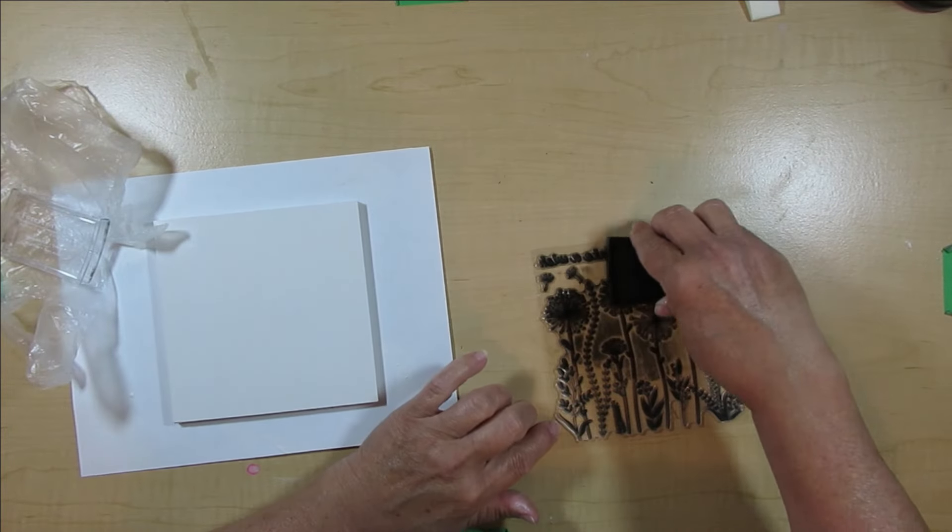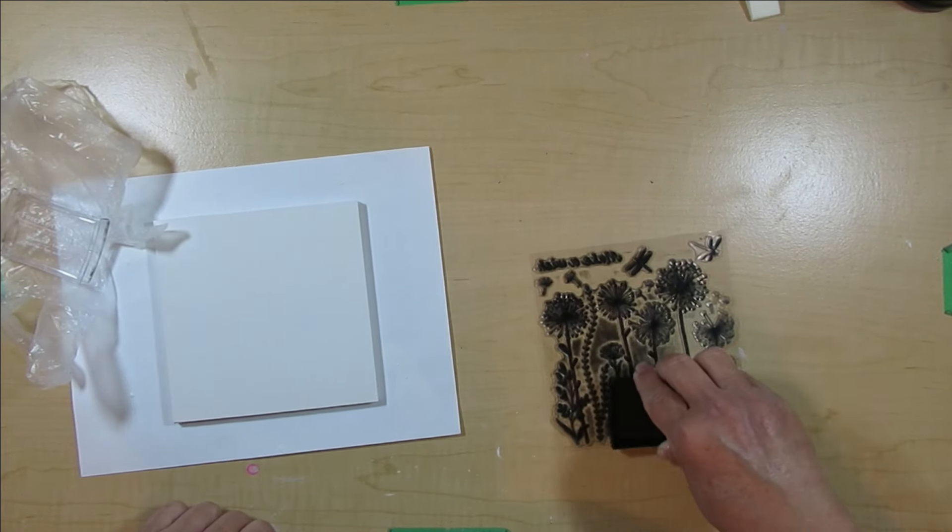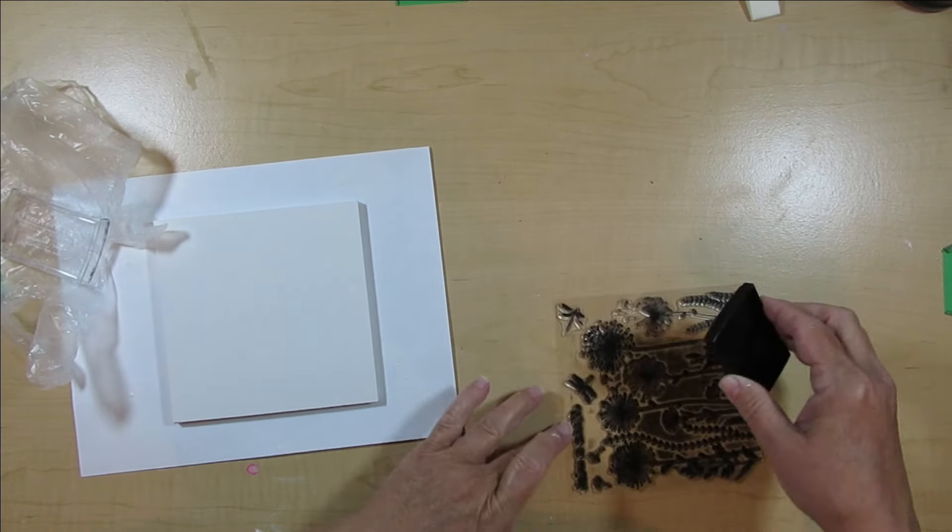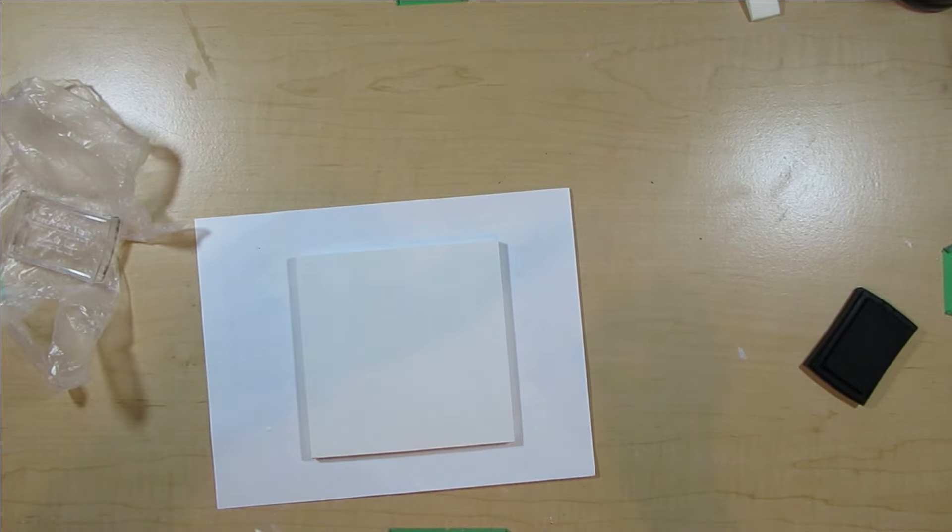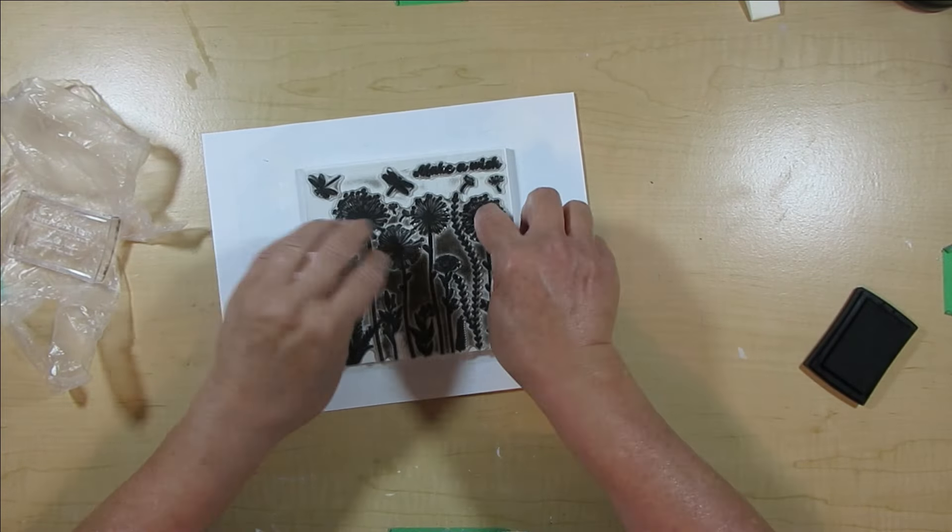Now I'm simply going to ink up the whole stamped area and I am getting some ink on the backing sheet, but I'm going to make sure that I don't press those areas down. So I'm going all the way to the edge and then I'm just going to flip it over and press it down very gently, but firmly onto my panel.